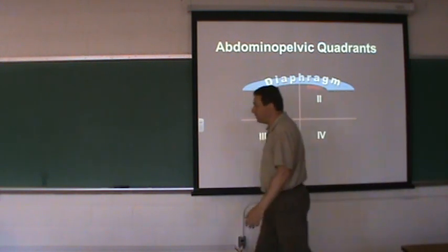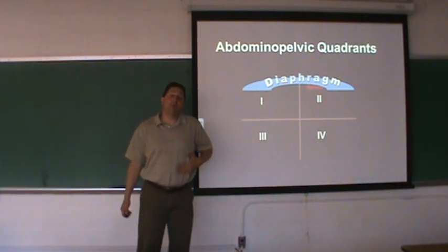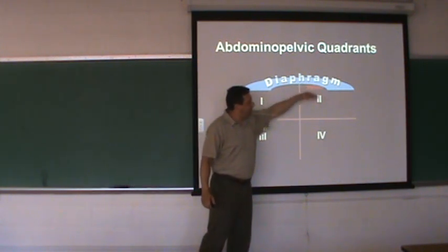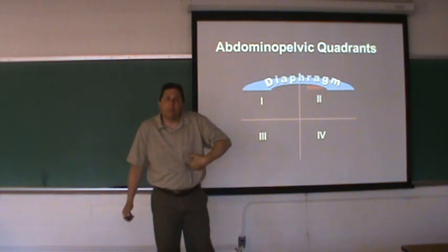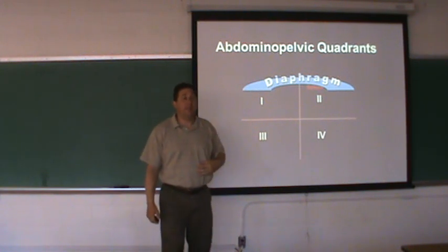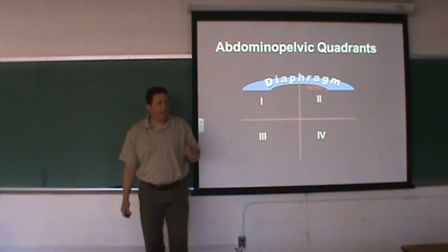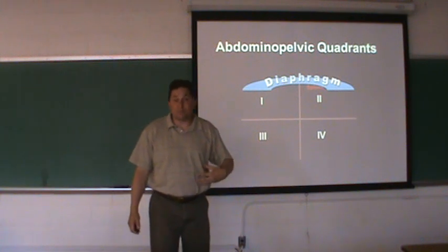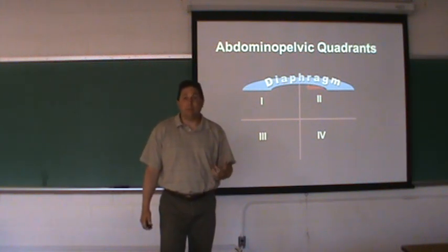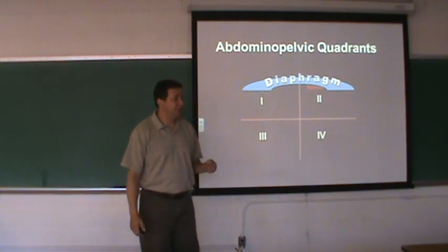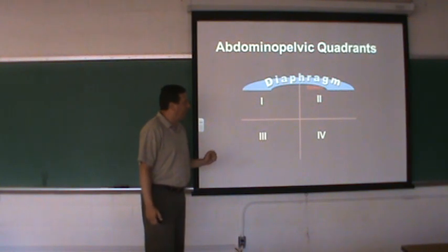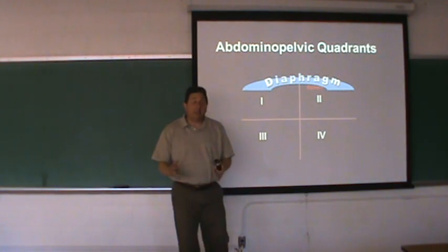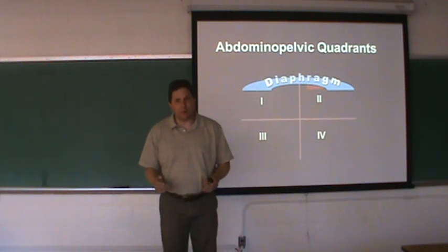The first one I want to talk about is the spleen. The spleen is in the upper left quadrant. If you find your rib cage, it's up under those bottom ribs — that's how high the spleen is. The spleen is a very vascular organ. Being very vascular, if it gets lacerated, punctured, or ruptures, it can bleed out quite vigorously, putting the person in a medical emergency.